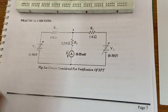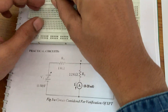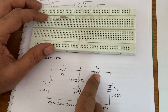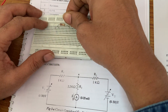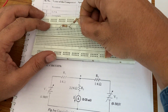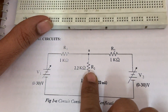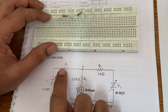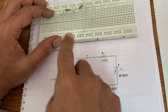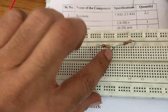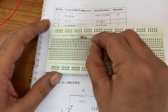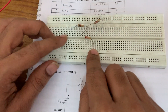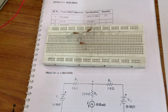First, with both sources acting, I am going to connect a one kilo ohm resistance on the breadboard. Then take one more one kilo ohm resistance and connect it to the second end of the first one kilo ohm resistance. Now take the 2.2 kilo ohm resistance and connect its first end to point A — which is the second end of R1 and first end of R2. Connect the second end of this 2.2 kilo ohm resistance anywhere on the breadboard.